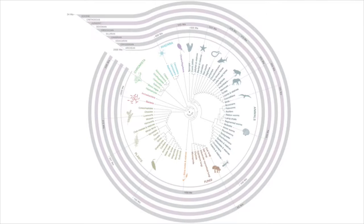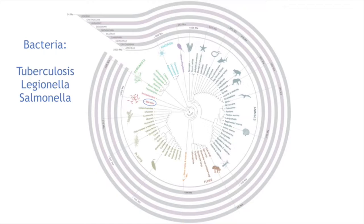Just a basic overview of where fungi are, because not everyone has a biology background or an interest in fungi. This is a tree of life, which uses phylogenetics to look at how things are related to each other and how they've evolved over time. From first life right in the middle, you have bacteria coming out — bacteria are known to cause diseases like tuberculosis, Legionnaire's disease, and salmonella.